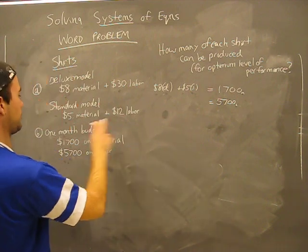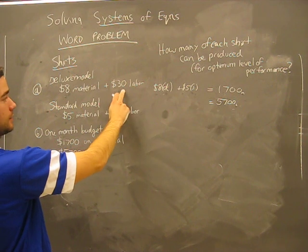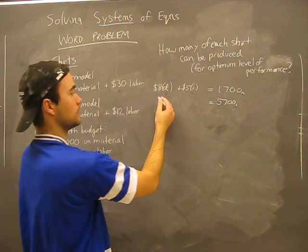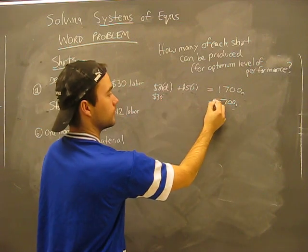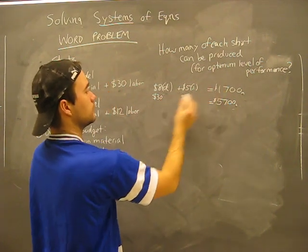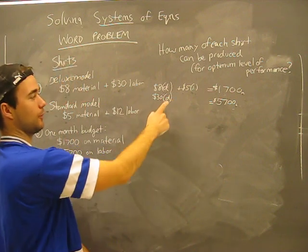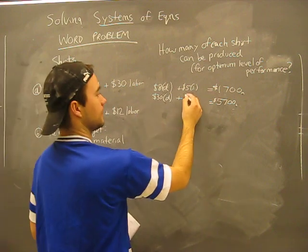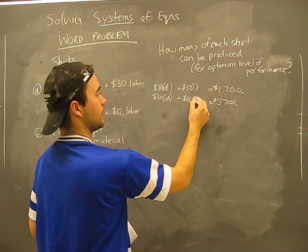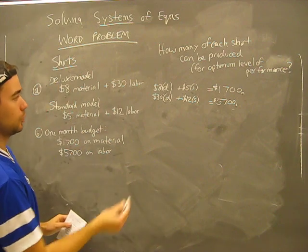Similarly, this is talking about labor, so let's look at our labor costs. Deluxe is $30 per labor, so $30 times however many deluxe shirts we use, and this is $12 times however many standard shirts we do.